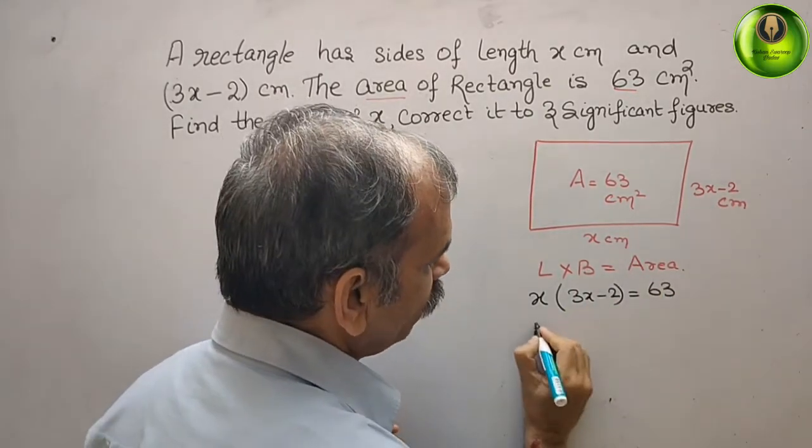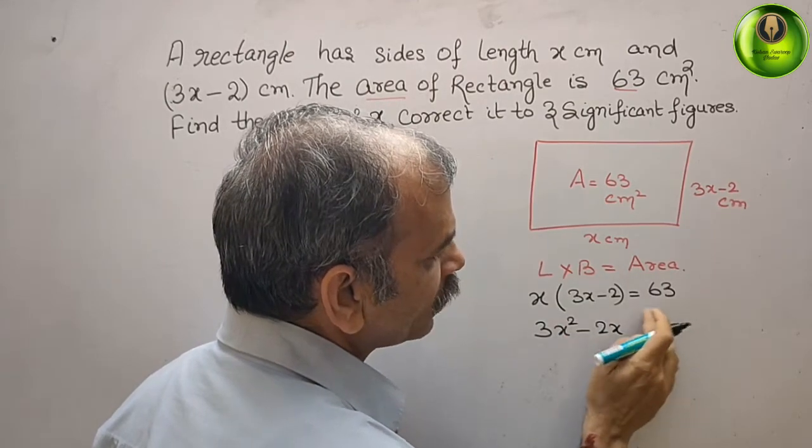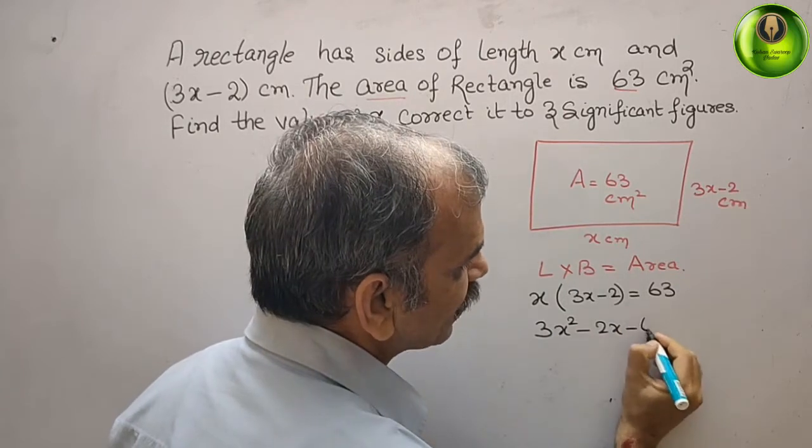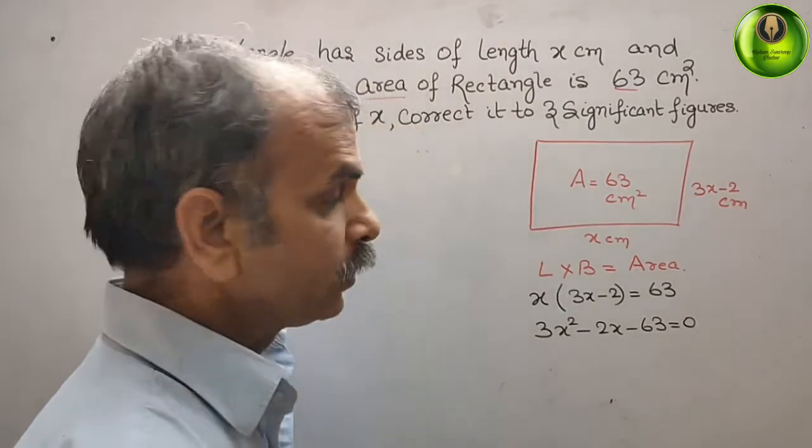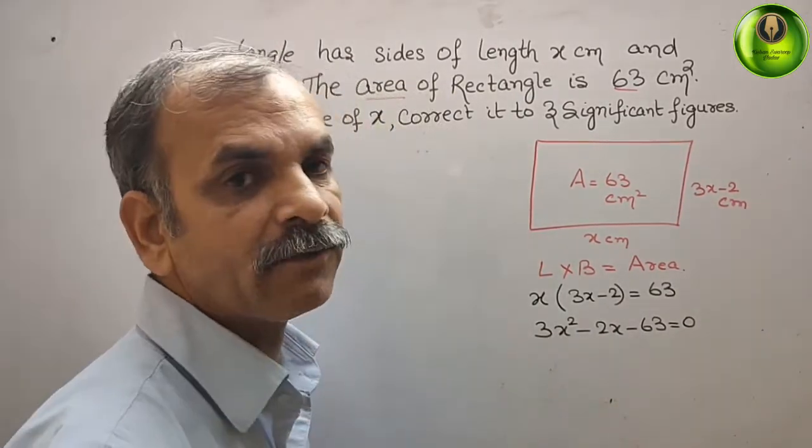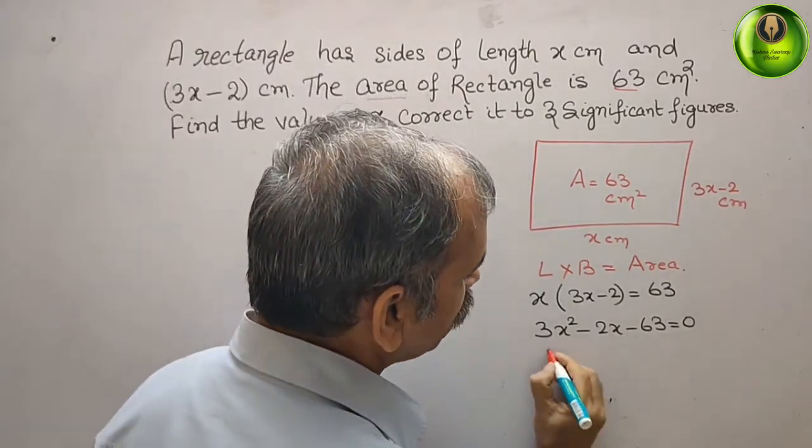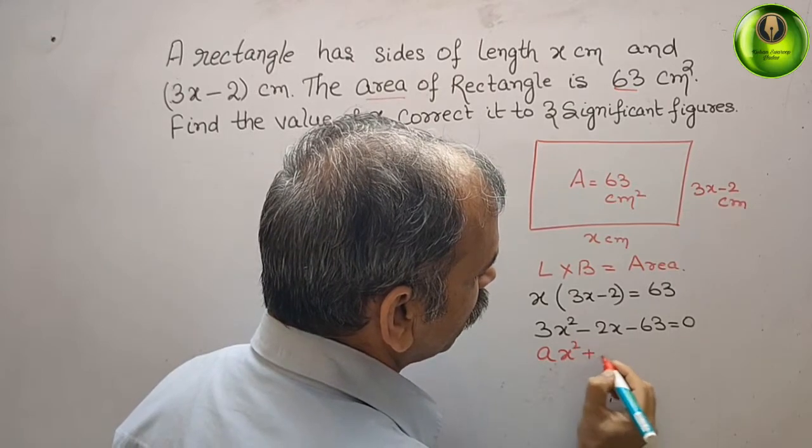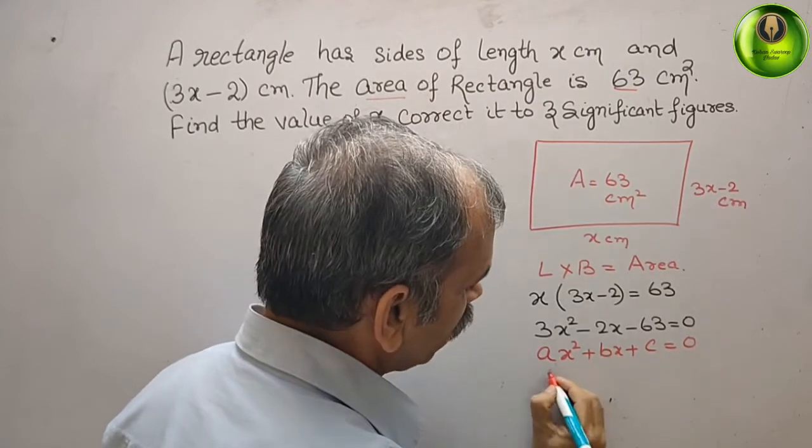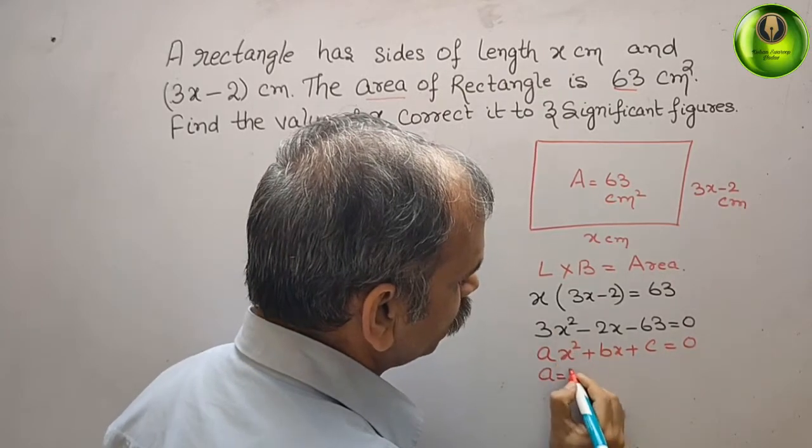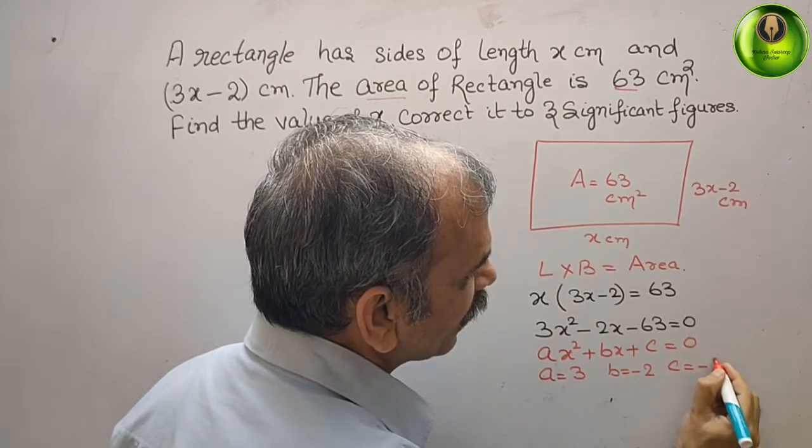By this. Now, we get 3x square minus 2x and bring this to left side. It will be minus 63. That gives you 0 now. Now, we will write what is this quadratic equation. We will write the standard form. That is your Ax square plus Bx plus C. That gives you 0. Now, what is your A? A is 3, B is minus 2, and C is minus 63.